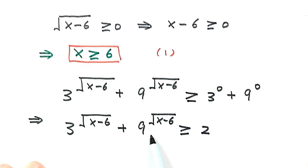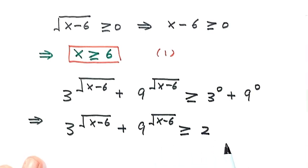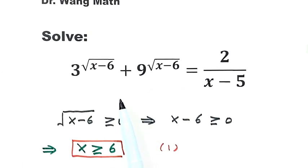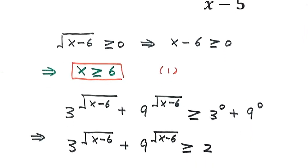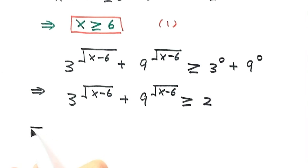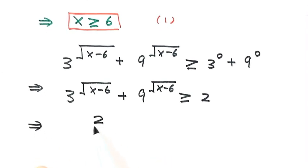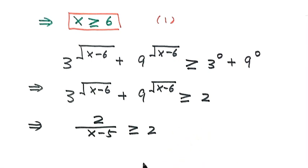Because the left-hand side of the equation is bigger than or equal to 2, that means the right-hand side, 2 over (x minus 5), is also bigger than or equal to 2. So next, we need to solve this inequality. But before we do that, we need to determine the sign of x minus 5.